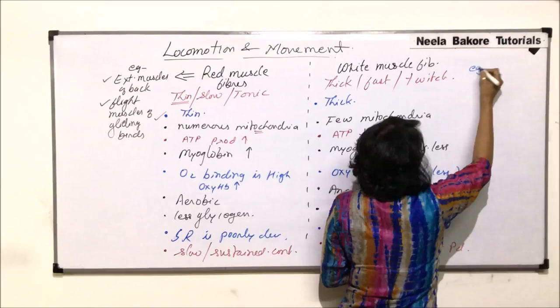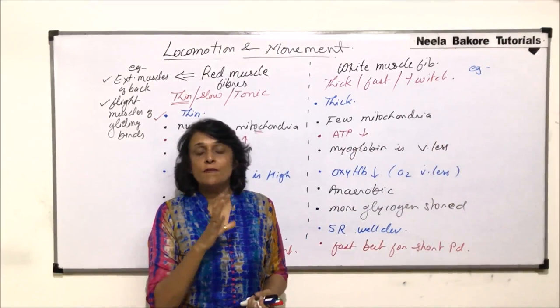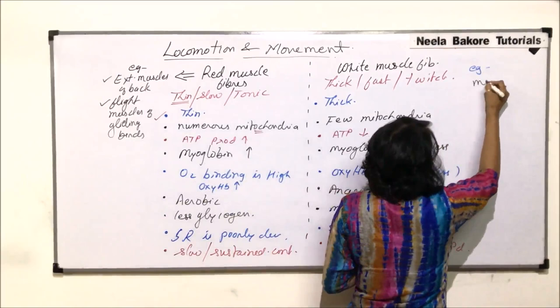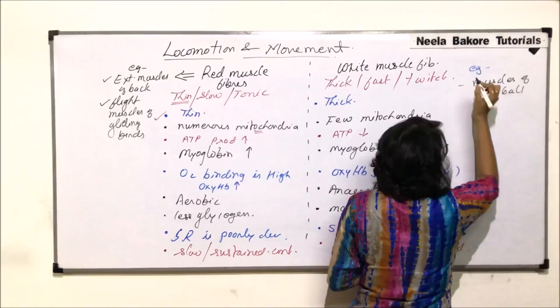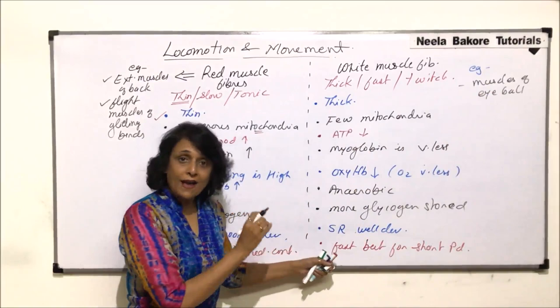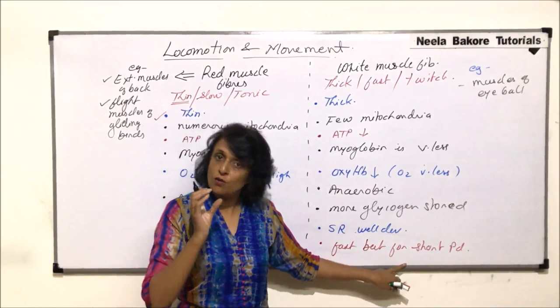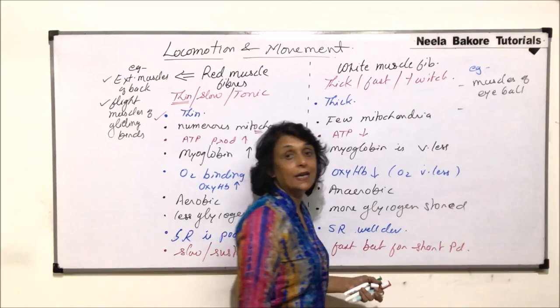For white muscle fibers, the first example is the muscles of our eyeball. When we move our eyeball up, down, left, or right quickly, these muscles contract rapidly. However, if we do it quickly and continuously they undergo fatigue, and can only sustain fast movement for a short period of time — they work very fast but for a short period of time.